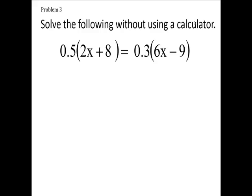Solve the following without using a calculator. I have 0.5 times 2x plus 8 equals 0.3 times 6x minus 9. So I have 0.5 times 2x. Now what would 5 times 2x be? 5 times 2x is what, 10x isn't it?